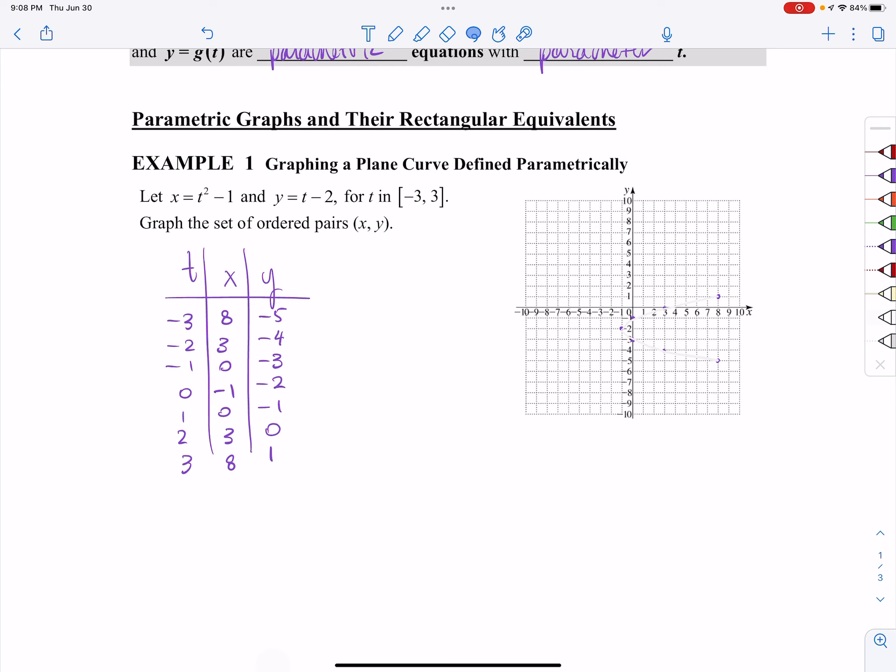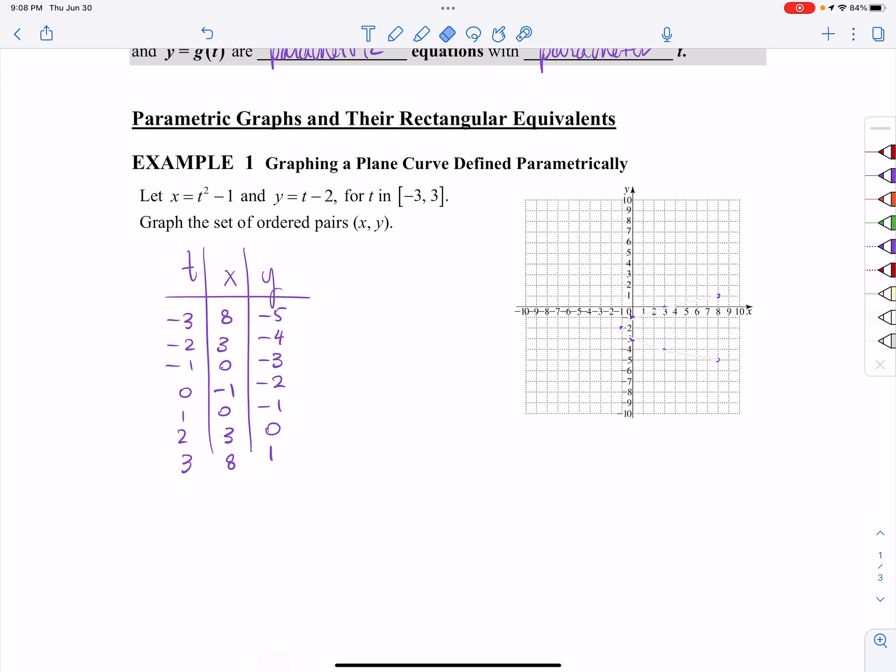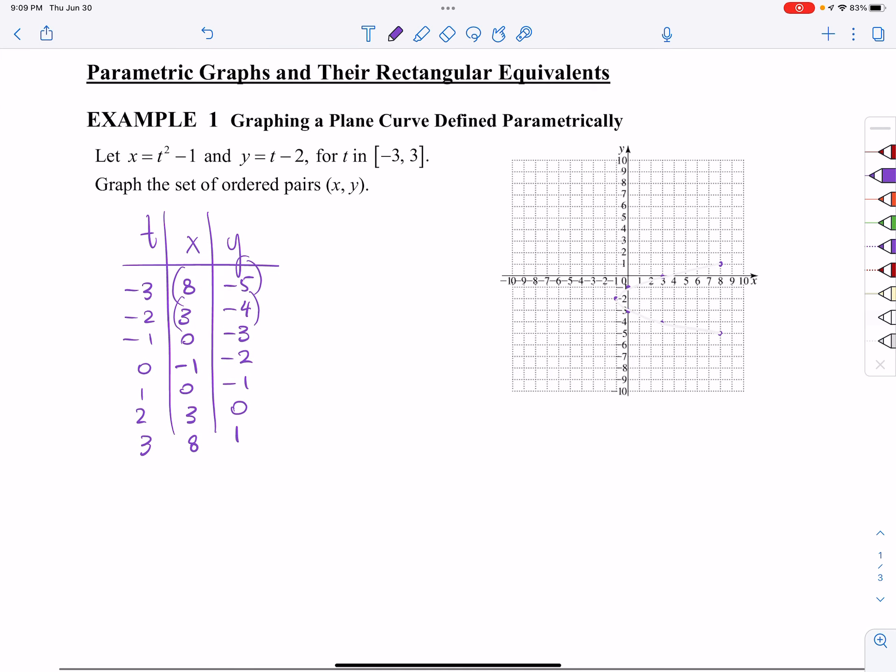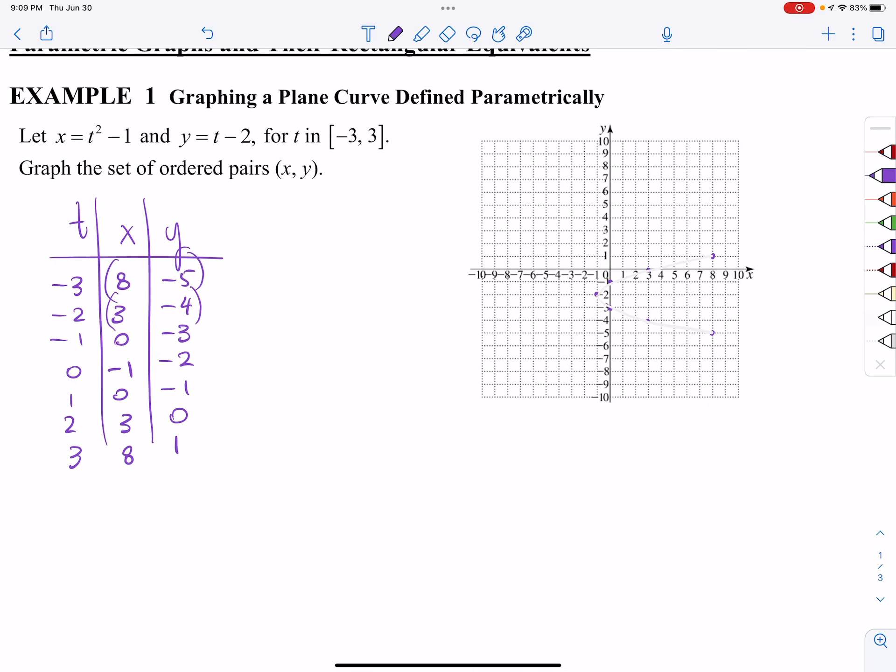Alright, so what we've got here then is a list of coordinates or ordered pairs. I'm going to graph 8, negative 5. I'm going to graph 3, negative 4. And when we come over here to our graph, 8, negative 5 is down here, and 3, negative 4 is here.